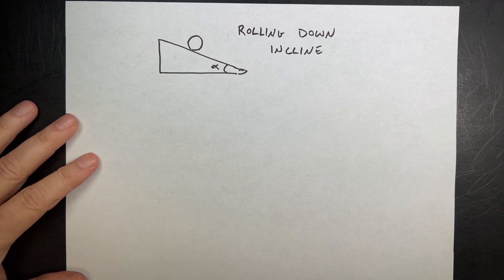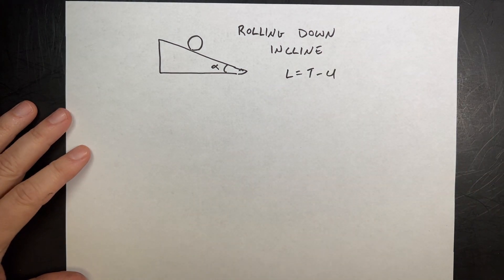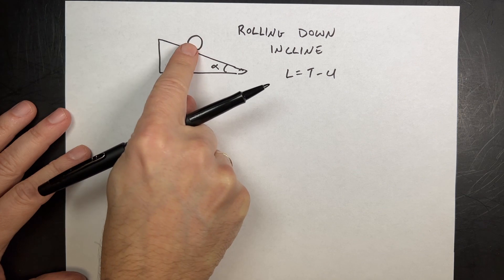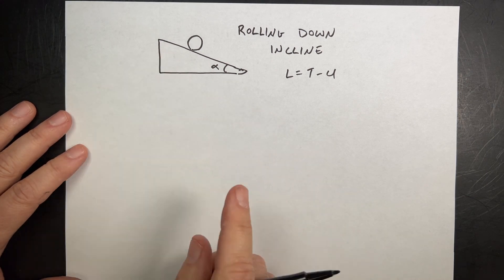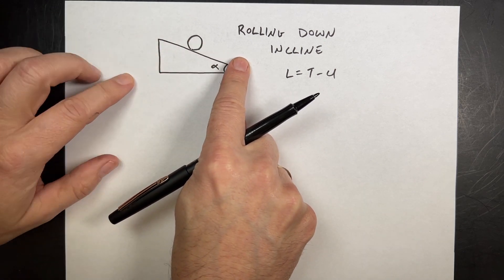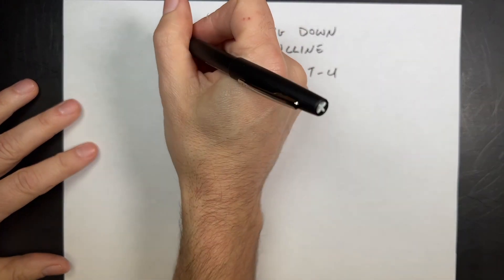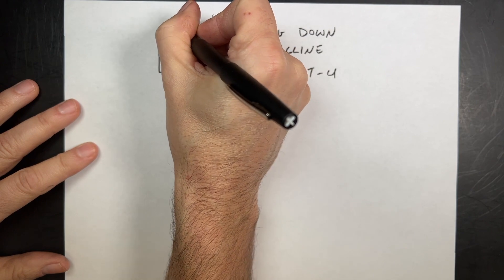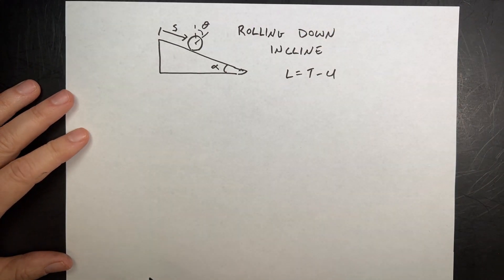Let's start off with the Lagrangian, which is defined as the kinetic energy minus the potential energy. We can think about the degrees of freedom. How many degrees of freedom does this object — I'm going to call it a disc — rolling down the incline have? It really only has one if it's not slipping, because the distance down is related to the rotation angle. But if we want to find the force of constraint, we need to under-constrain it, so we need two degrees of freedom. I'll call this variable S, the distance from the top, and then theta as the rotation angle.